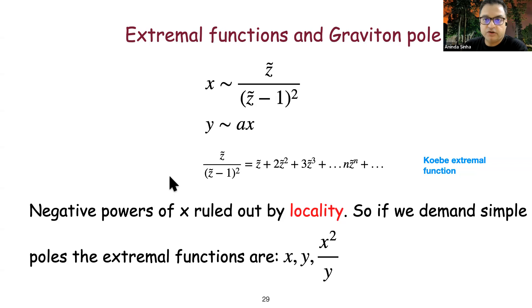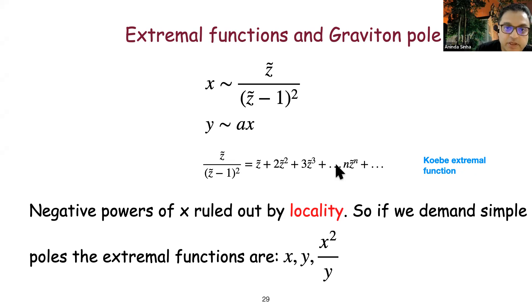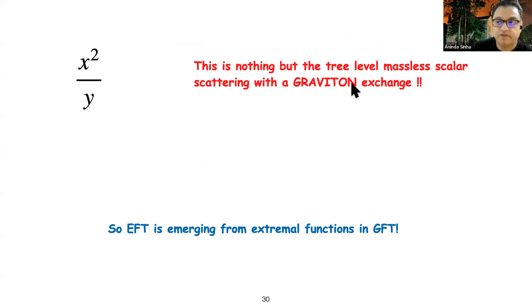The extremal Koebe functions play an important role. Taylor expanding around z equal to zero, the coefficients are 2, 3, etc., which saturate the upper Biberbach-Rogosinski bounds. The quadratic Mandelstam invariant x and the cubic invariant y look like Koebe functions themselves. Negative powers of x are ruled out by locality, so to construct functions with simple poles, the extremal functions are x, y, and x squared over y. Notably, x squared over y is nothing but tree-level massless scalar scattering with graviton exchange—a curious observation suggesting that EFT is emerging from extremal function considerations in GFT.